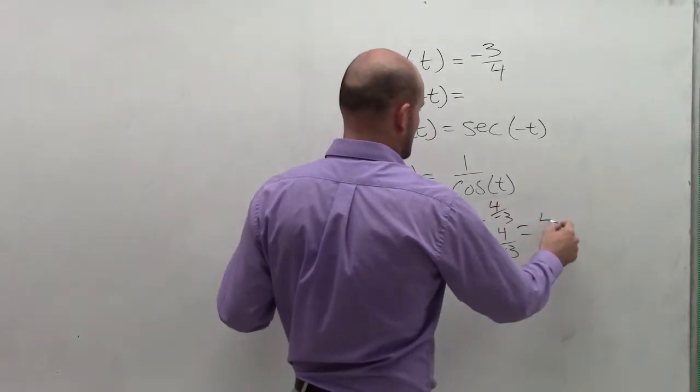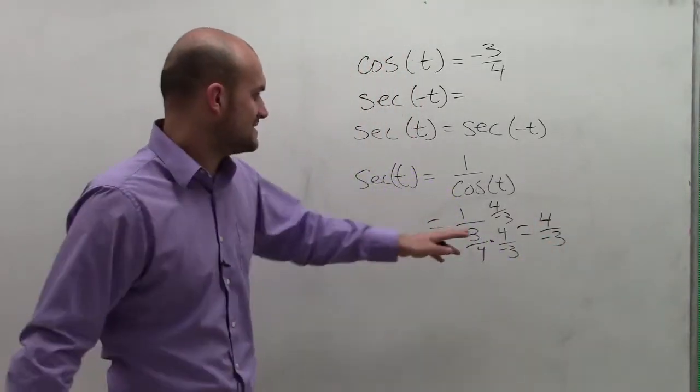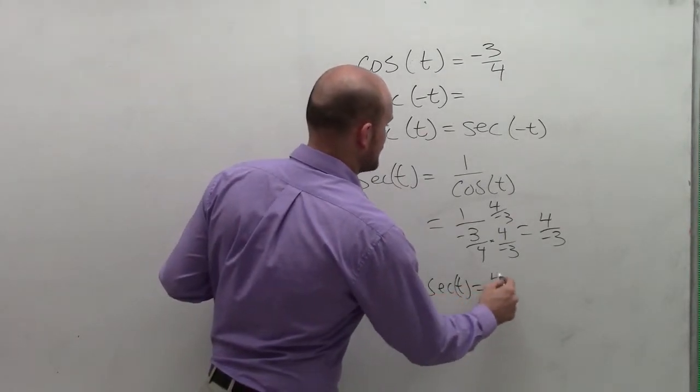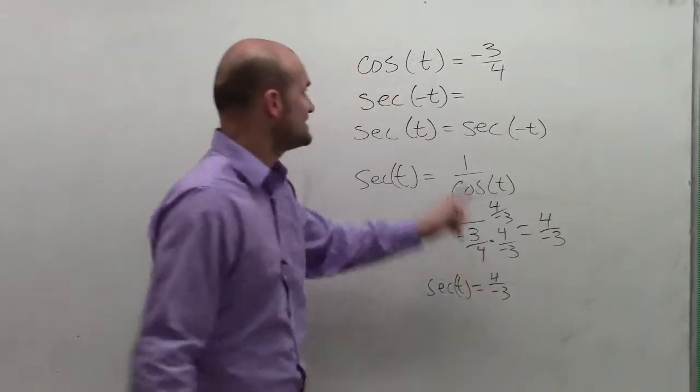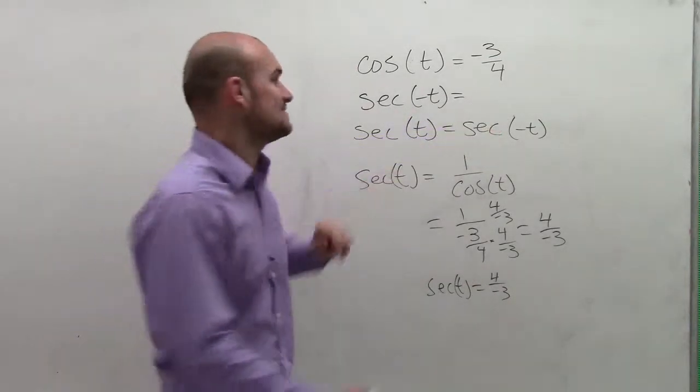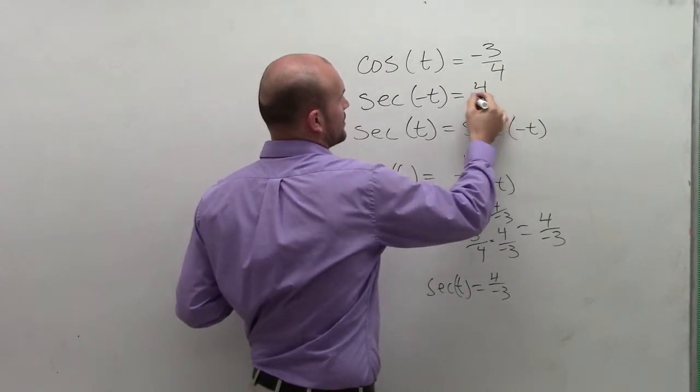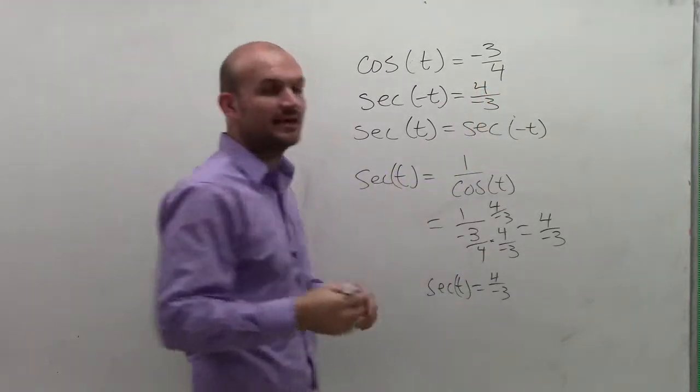And therefore, what I have is I end up with 4 over negative thirds. And since secant of my t is equal to 4 over negative thirds, and since that's equal to secant of negative t, I could say that secant of negative t is equal to 4 over negative thirds, or negative 4 thirds.